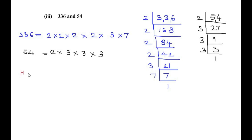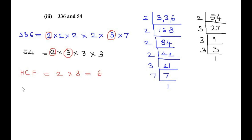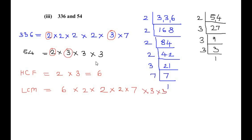Now let us find the HCF by circling the common numbers. Between 336 and 54, the common factors are one 2 and one 3, so the HCF is 6. For the LCM, we multiply the HCF by the non-common terms: 6 times 2 times 2 times 7 times 3 times 3, which gives us 3024.